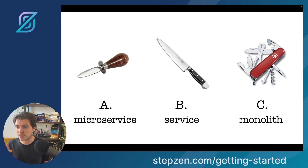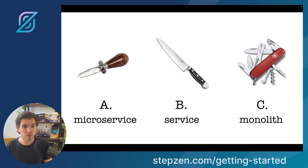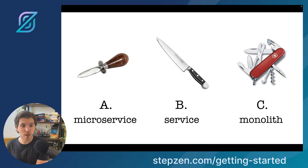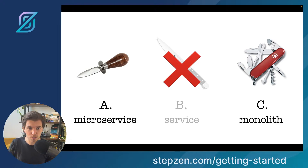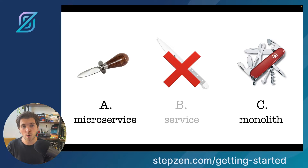It is a Swiss army knife that you can use for basically everything. It has a screwdriver, a scissor, an opener for your bottle — your beer bottle, your wine bottle. It can do everything, and monoliths can do everything. But a microservice, as you can see from A, does just one thing. And it does that one thing very well. I'm not even going to talk about services because I see too many companies using services where they should have been using a monolith or a microservice.